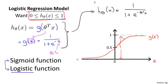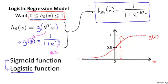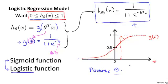Given this hypothesis representation, what we need to do as before is fit the parameters theta to our data. So given a training set, we need to pick a value for the parameters theta, and this hypothesis will then let us make predictions. We'll talk about a learning algorithm later for fitting the parameters theta, but first let's talk a bit about the interpretation of this model.